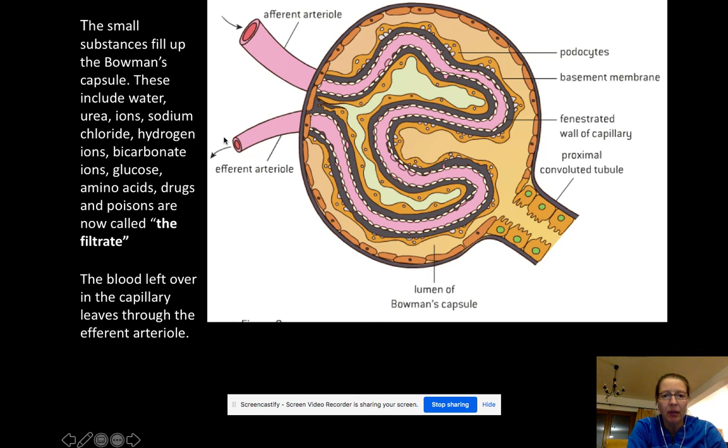The blood leftover in the capillary is going to leave here through the efferent arteriole. The difference between the blood before and after, we're going to look at one more slide there, but essentially the things that are left in the blood are proteins and cells and some larger molecules where everything else gets shoved into the filtrate. Obviously there's still going to be water and blood plasma being able to move through, but still there's going to be a whole lot of it that gets pushed into the Bowman's capsule. And it's now called the filtrate, what is collecting in here.